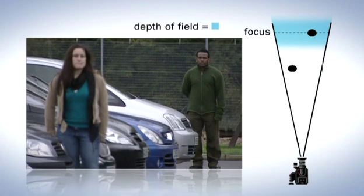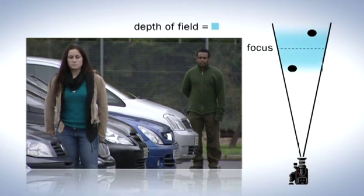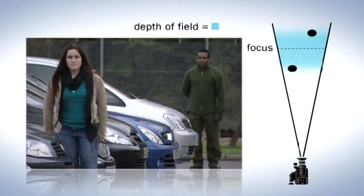Another factor that can have a significant impact on the usefulness of a CCTV image is the depth of field. This is the extent of the area in front of and behind the main object of interest that appears in focus. Generally, the greater the depth of field, the better the image is for CCTV observation, because this means that it's not just the required object of interest that's in focus, but other objects in the foreground and background will also be clearly visible.